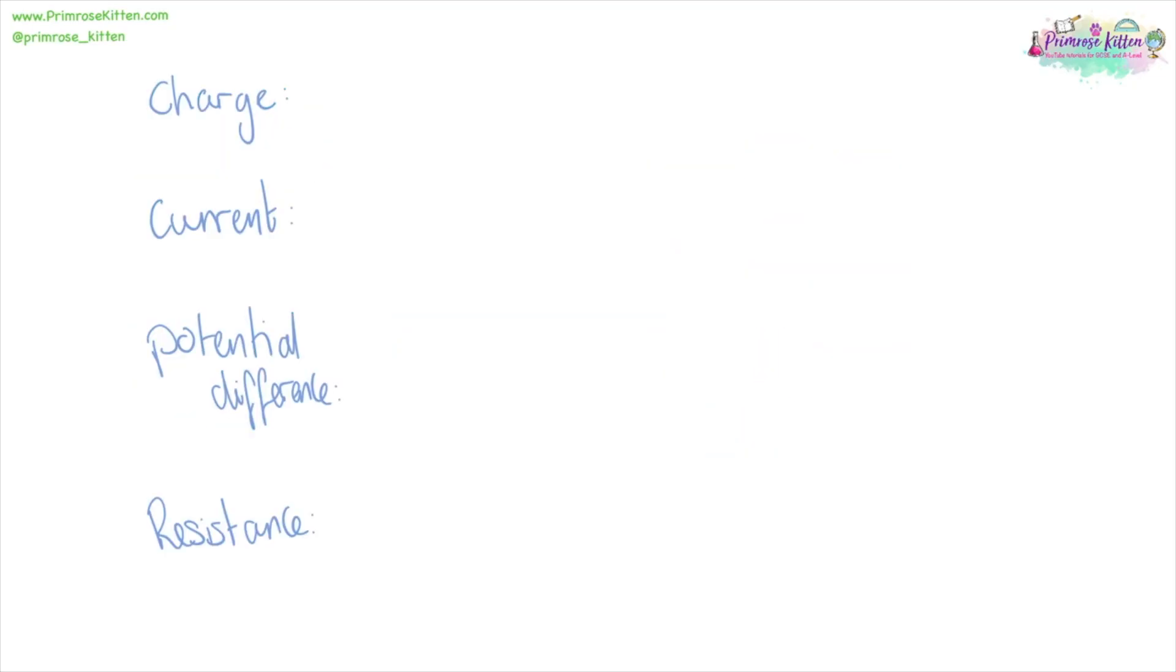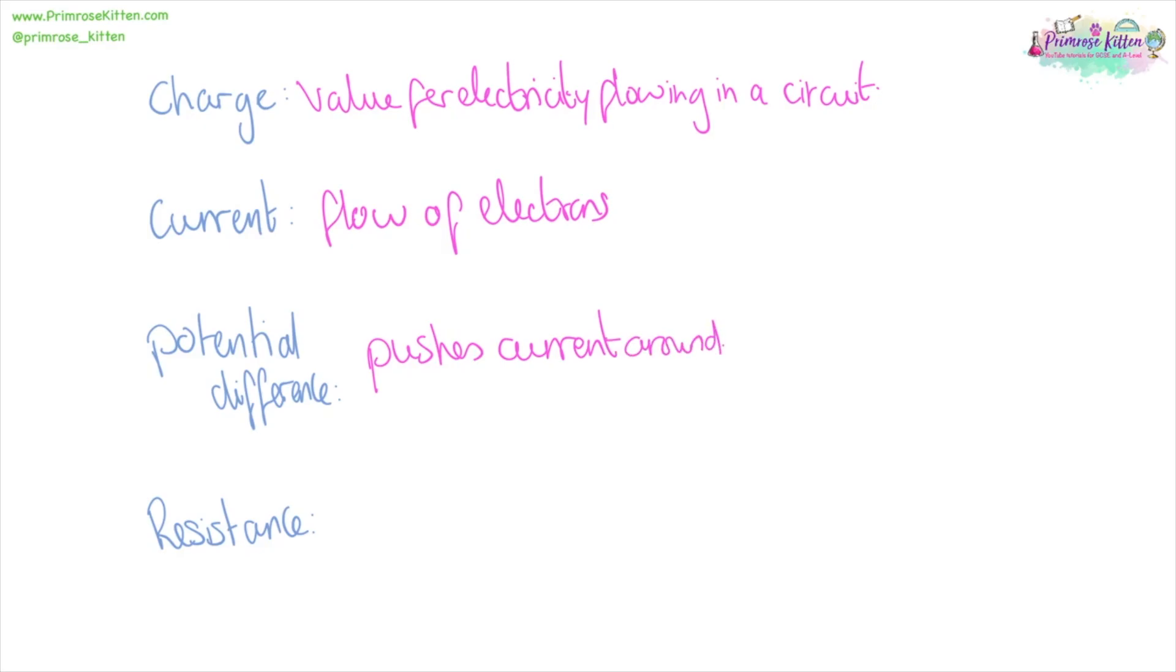Charge is the value of electricity flowing through a circuit. Current is the flow of electrons. Potential difference is what pushes the current around. And resistance is anything that slows down the current.